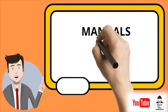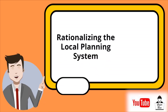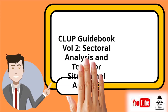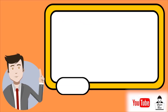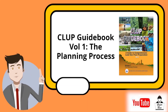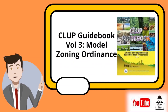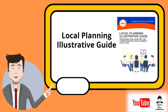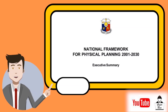First, let's have the manuals and frameworks: Rationalizing the Local Planning System; CLUP Guidebook Volume 2 – Sectoral Analysis and Tools for Situational Analysis; CLUP Guidebook Volume 1 – The Planning Process; CLUP Guidebook Volume 3 – Model Zoning Ordinance; Local Planning Illustrative Guide; and the National Framework for Physical Planning 2001–2030.